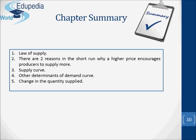Other determinants of supply include the costs of production, the profitability of alternative products, the profitability of goods in joint supply, random shocks, and expectations of future price changes. If price changes, the effect is shown by a movement along the supply curve — we call this a change in the quantity supplied. If any determinant other than price changes, the effect is shown by a shift in the whole supply curve — we call this a change in supply. A rightward shift represents an increase in supply, and a leftward shift represents a decrease in supply.